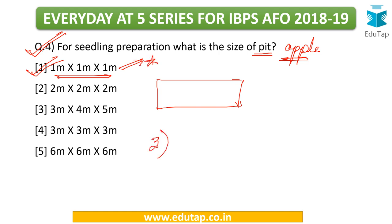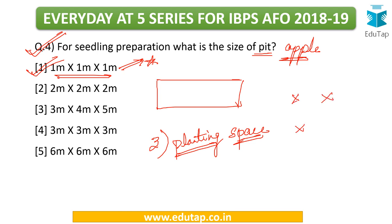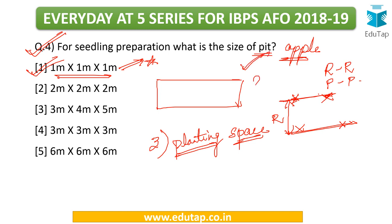Here's the third viewer question for today: what is the planting space required when apples are cultivated? When you talk about planting space, there is row-to-row spacing and plant-to-plant spacing. You can see that these are rows, and you measure what is the row-to-row spacing; and when you see the space between each individual plant, that is plant-to-plant spacing. You need to tell me what is the planting space required in the case of cultivating apples.